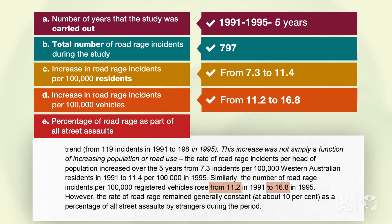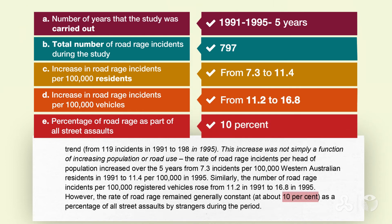Now the last one is a little bit more tricky. You're going to look for the percentage of road rage as part of all street assaults. So again, look for key words: percentage, street assaults. And the number that we get is 10%.